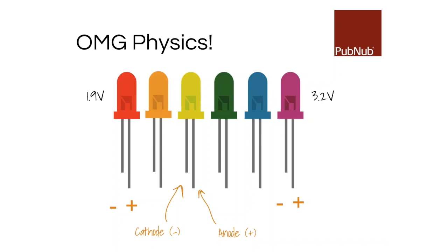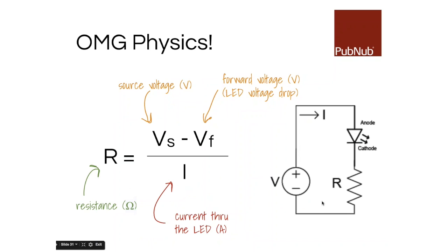Once you know the anode and cathode, here's the actual circuit we're going to create. You need a resistor — the reason is that if you supply too much voltage to the LED, it might not handle it and it burns. So you need a proper resistance. To calculate: R = (Vs - Vf) / I, where Vs is source voltage from Raspberry Pi, Vf is the forward voltage (LED voltage drop), and I is current through the LED.